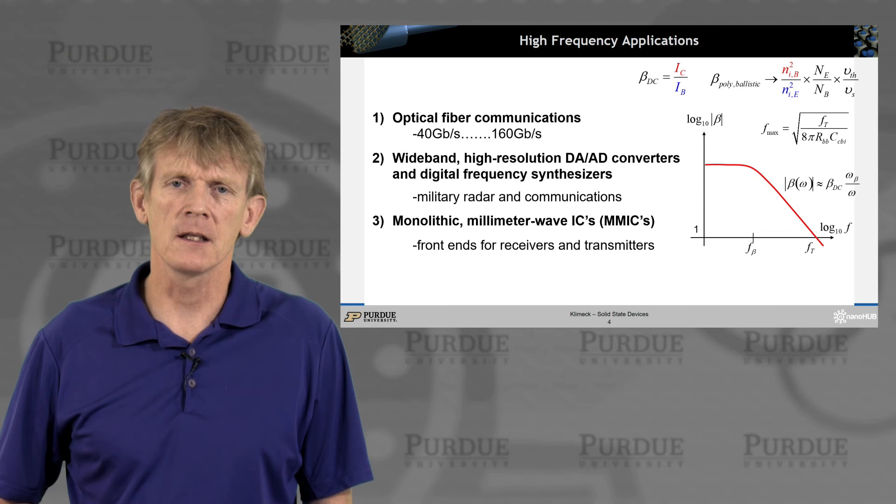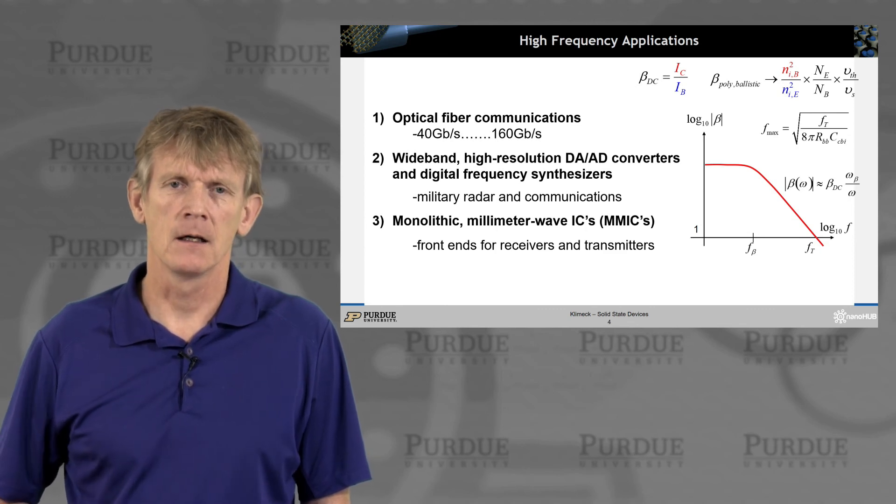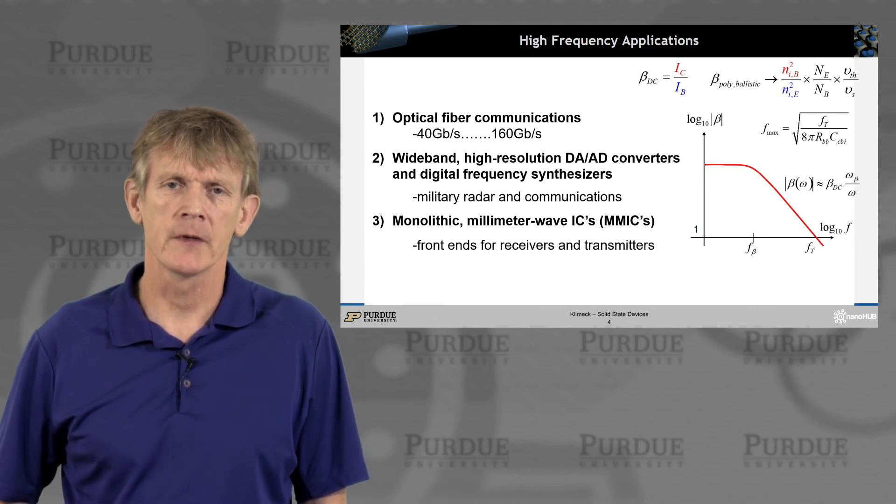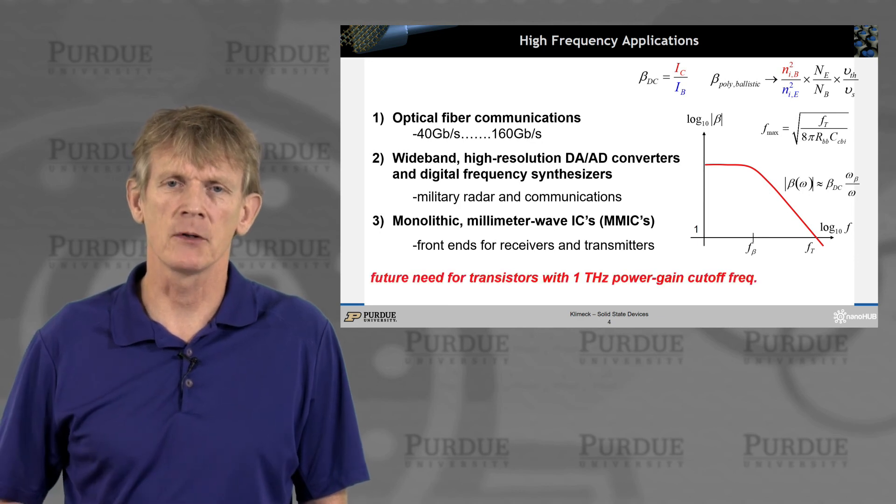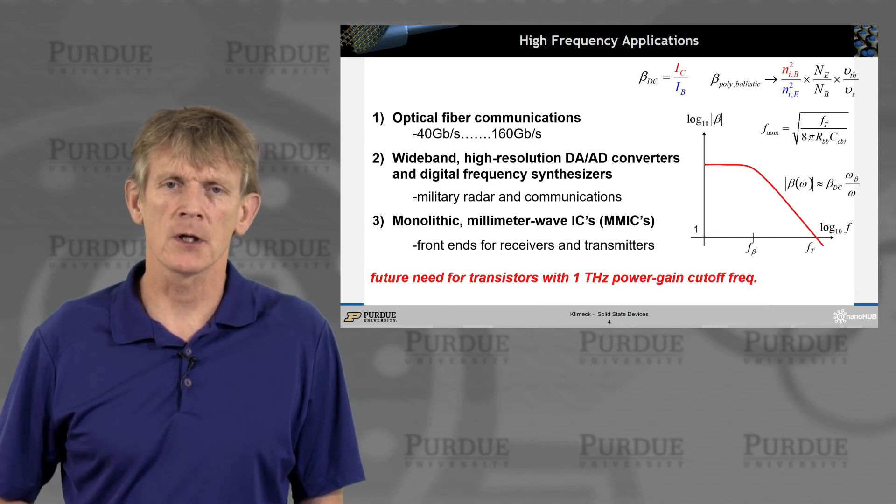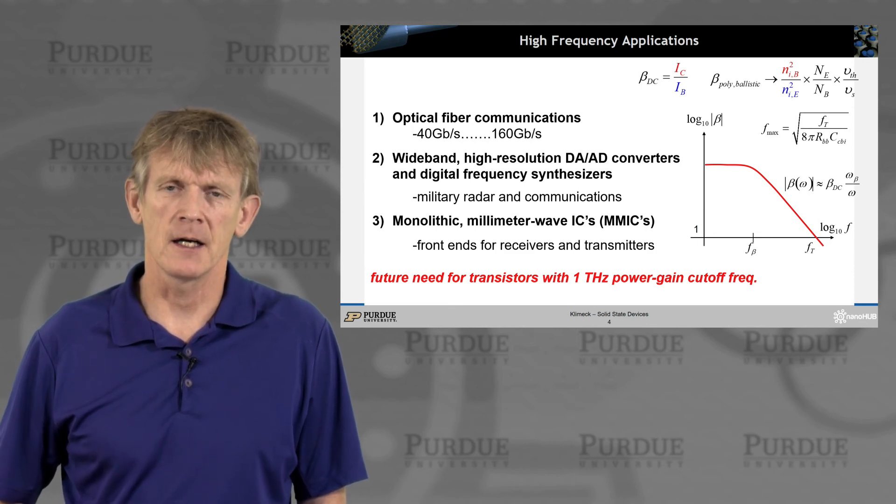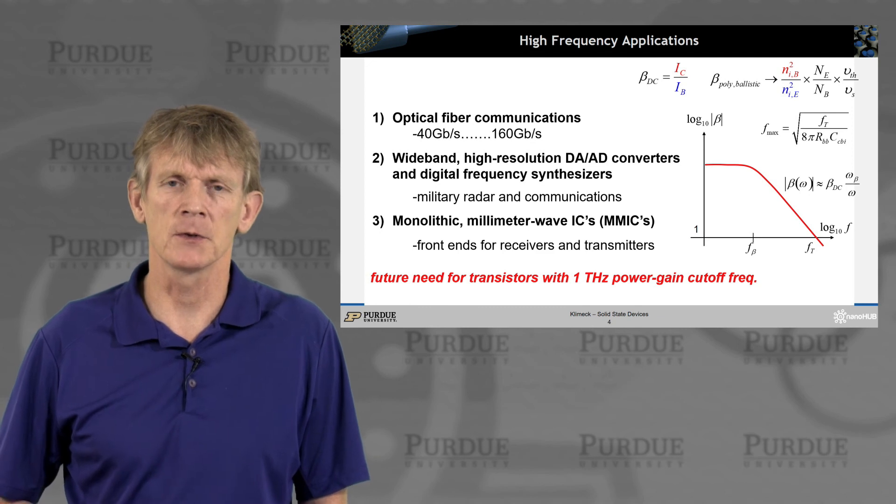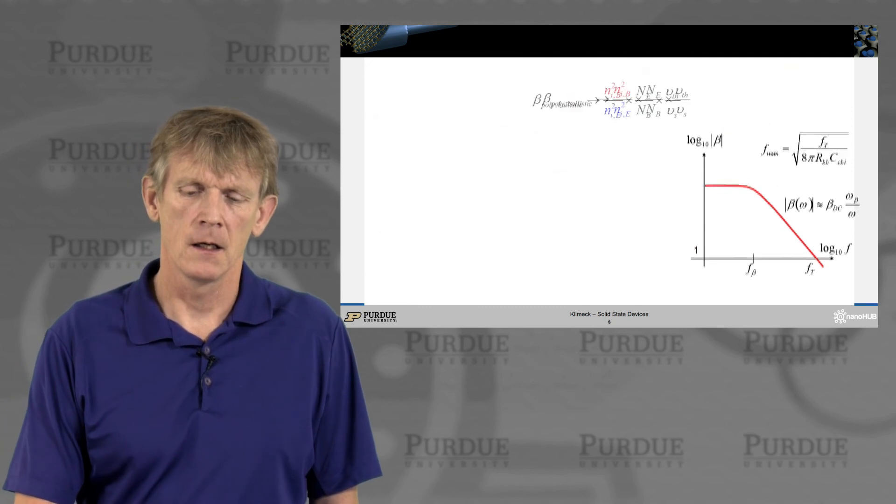And then there's a whole world of monolithic millimeter wave integrated circuits, also called MIMICs. These are really the front ends to receivers and transmitters. So think about all the communication networks that you encounter. Whatever you have on your cell phone, it has an antenna in it. It needs to be amplified. The signal needs to be amplified. So then there's the opportunity to push all this into the terahertz regime where the higher cutoffs are desired and a different frequency spectrum can be explored.